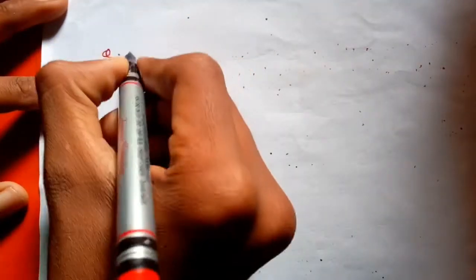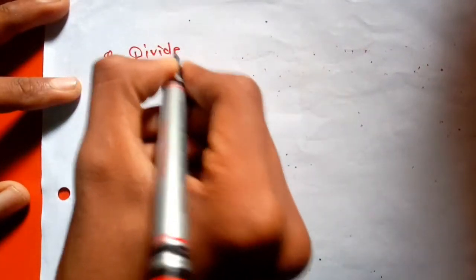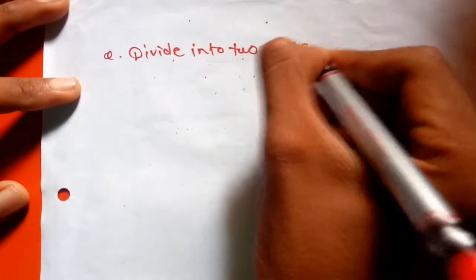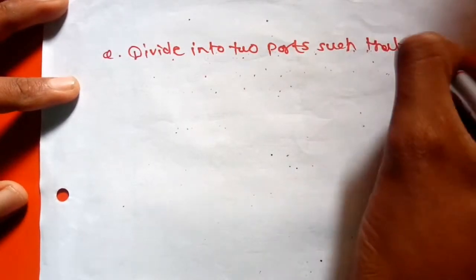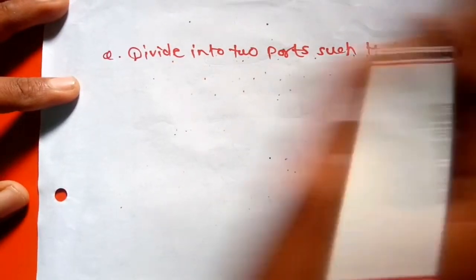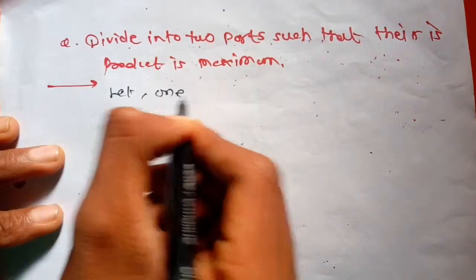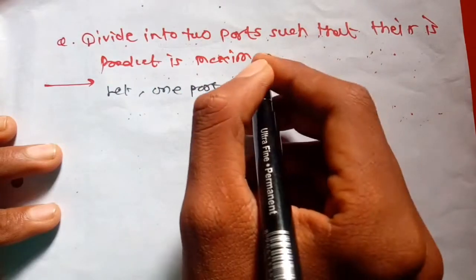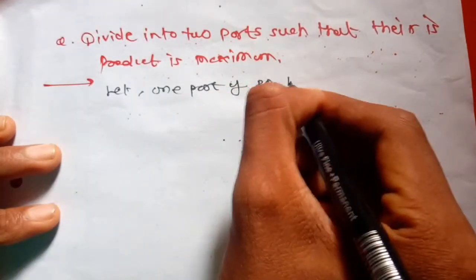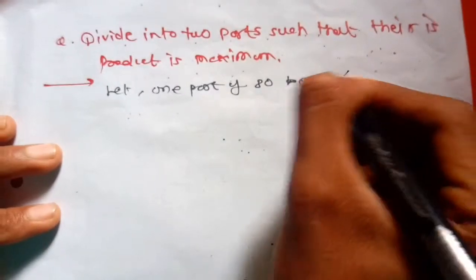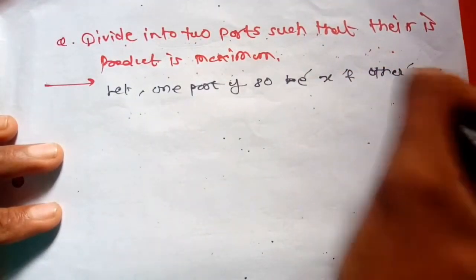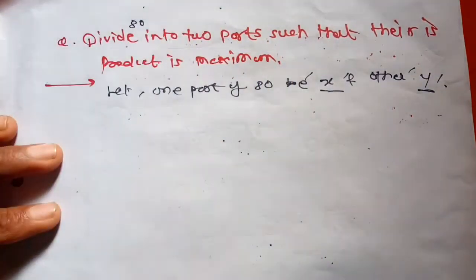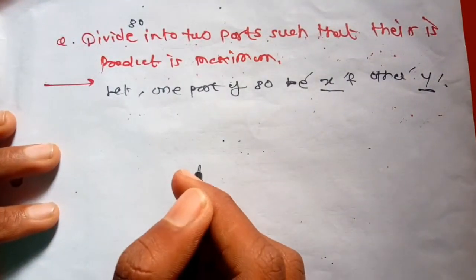Divide it into two parts such that their product is maximum. Let one part be X and the other part be Y.